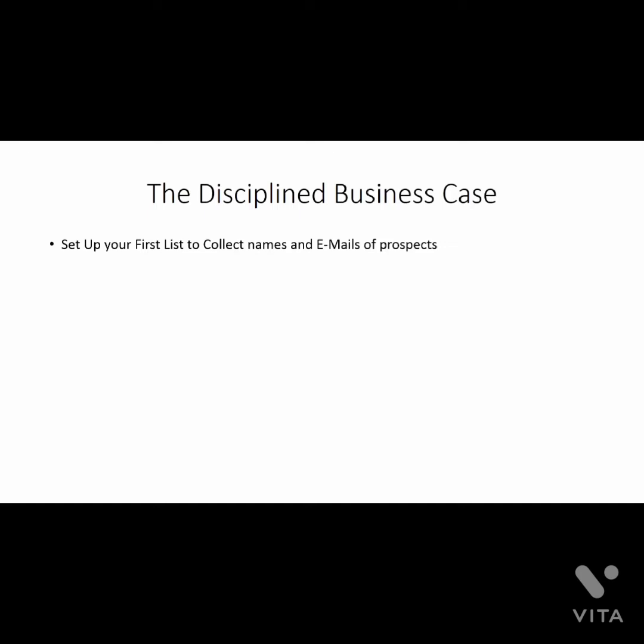The first thing you need to do is set up your first list to collect names and email addresses of prospects only. It doesn't matter where you're setting this up, where that opt-in page is going to be. When you're sending emails to these people, you're going to speak to them as if they have not become your customer yet. So you want to keep them on a separate list.